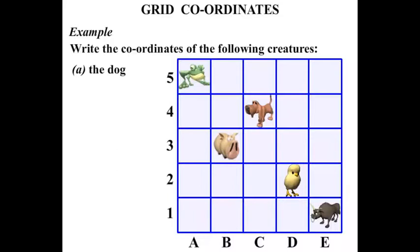Part A, the dog. Okay, let's see where the dog is. There he is. Now we're going to see what it matches up with. You can see that it's in line with the C. It's in the C column and in the row that's 4. So C and 4. We write C4.